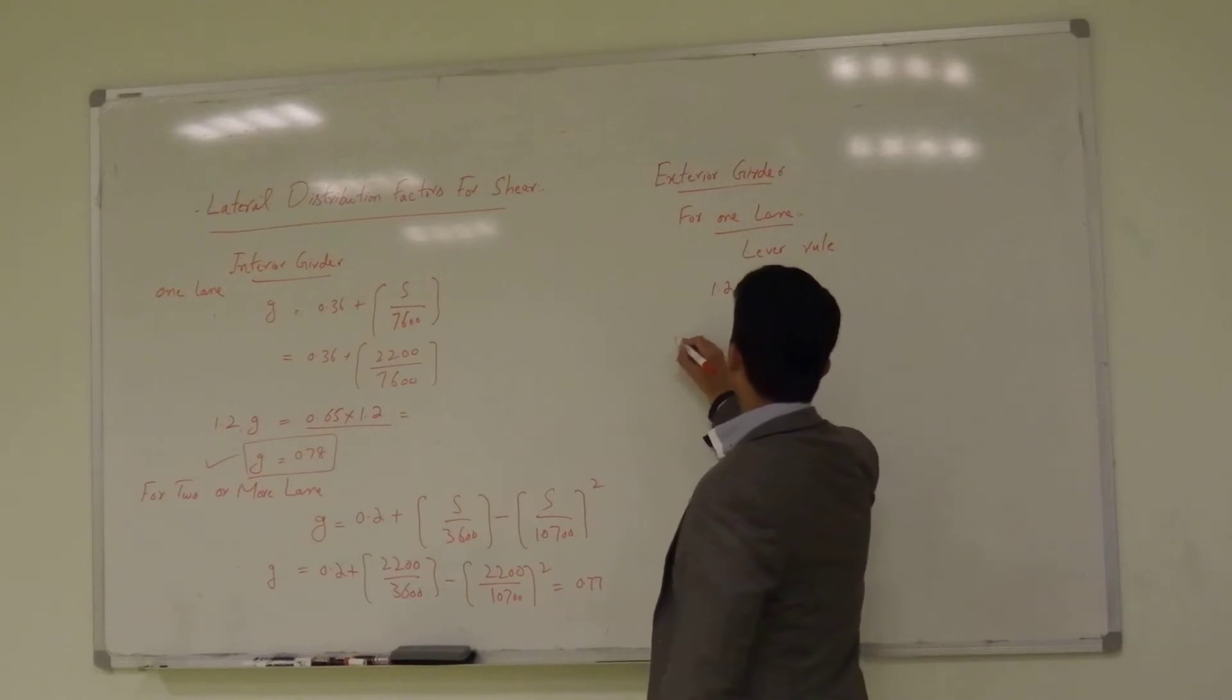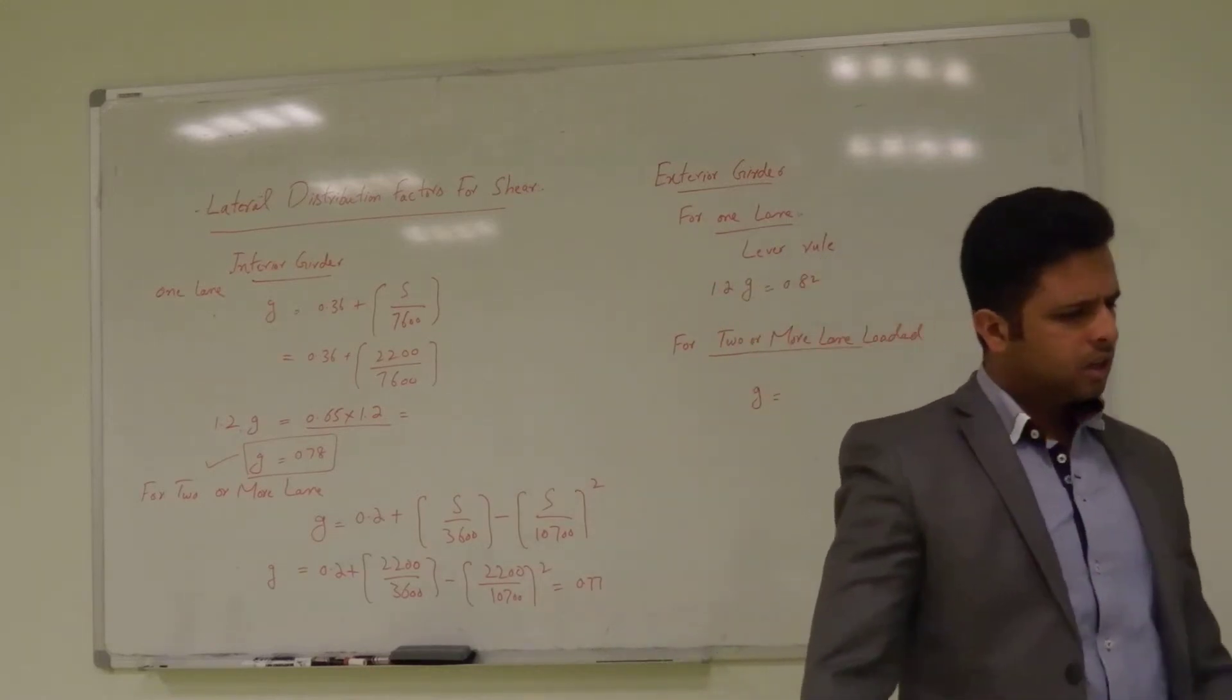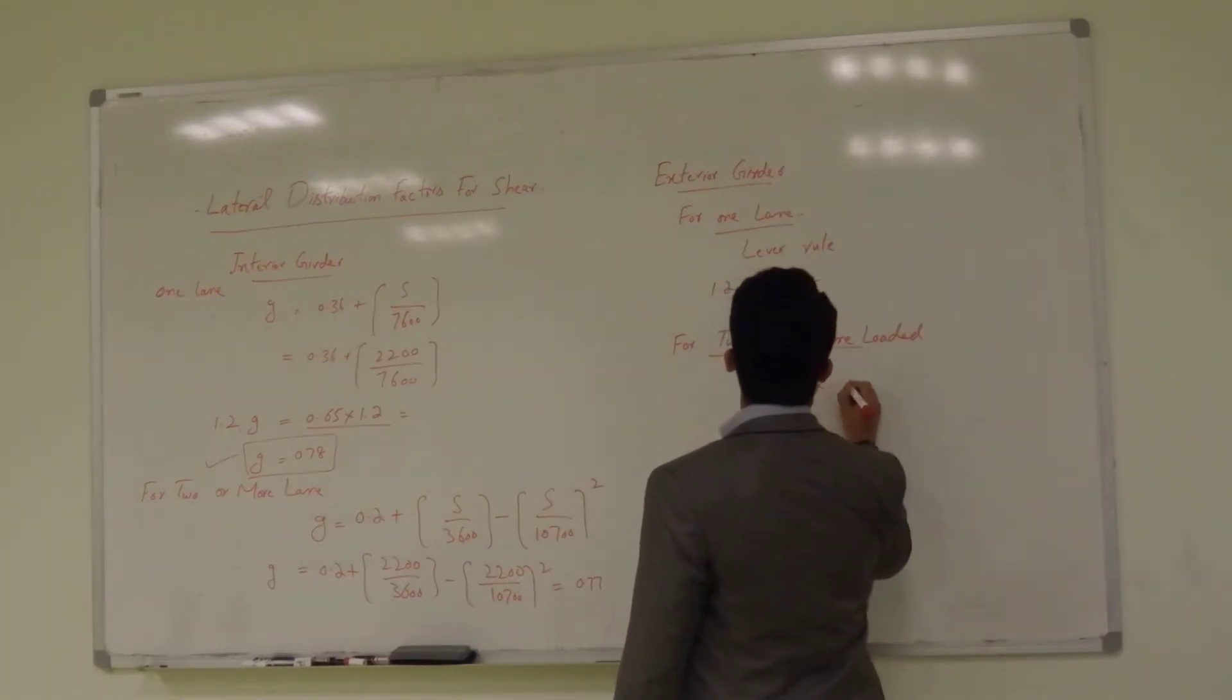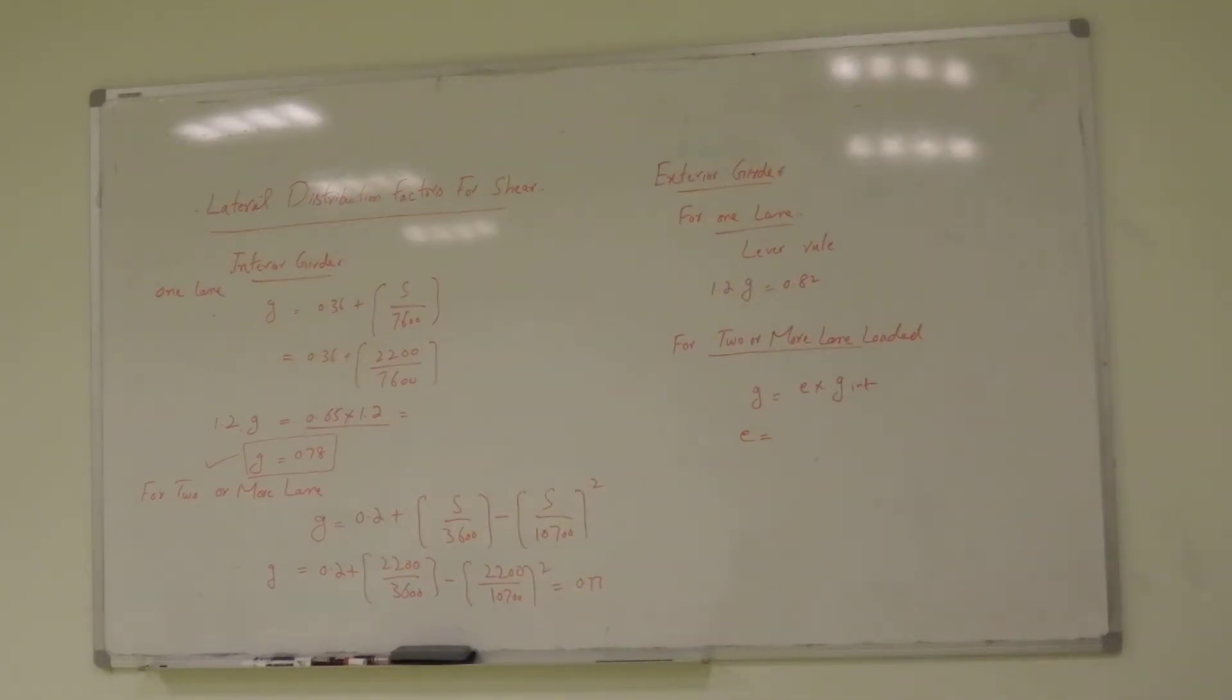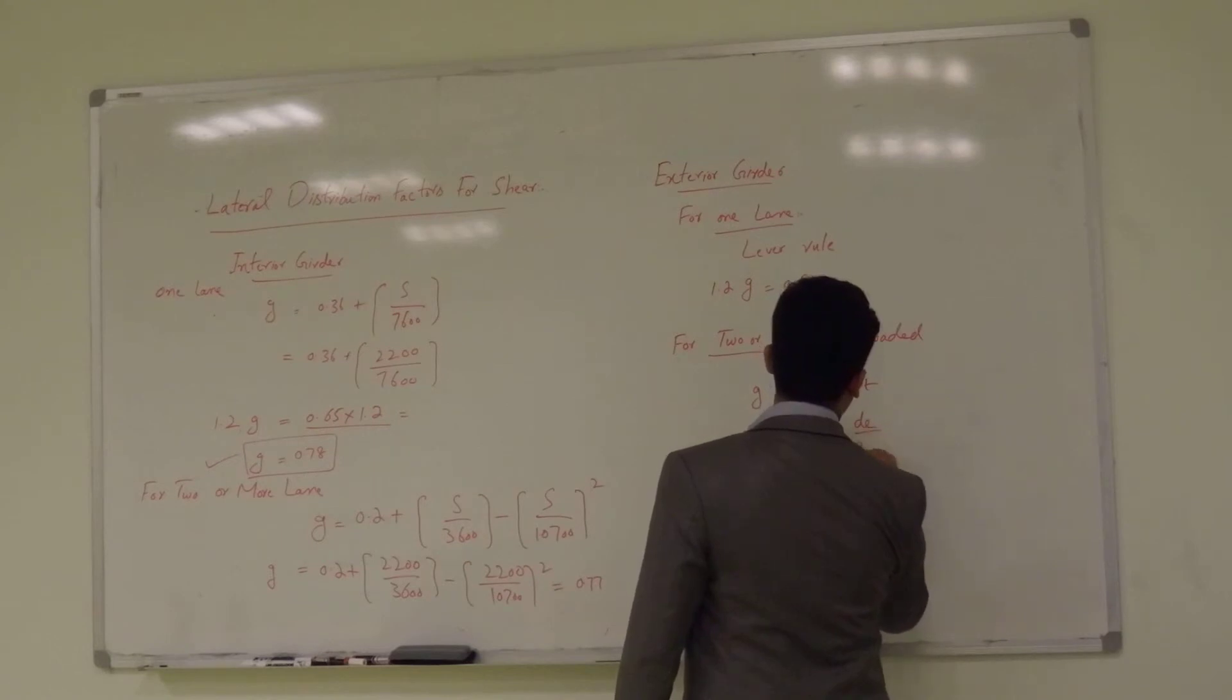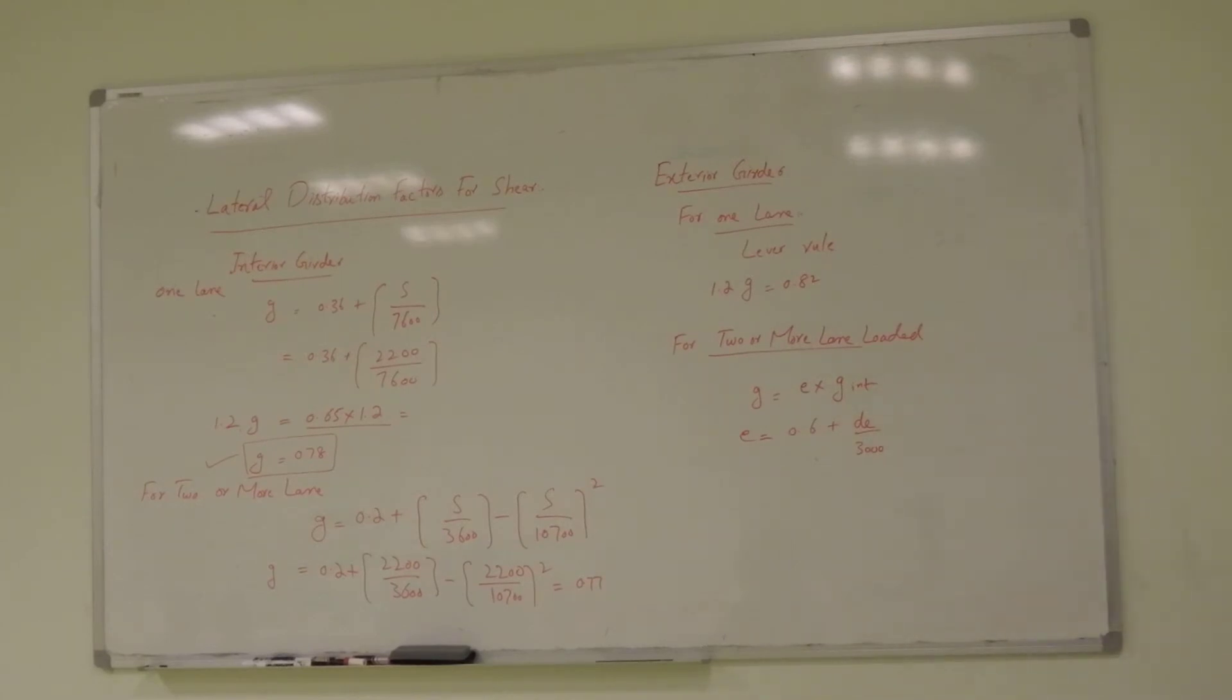We already have it and for two or more lane loaded g is equal to the same thing. In that case g is equal to e times g interior and e is equal to 0.6 plus d_e over 3000 and this d_e was the, we calculated this,